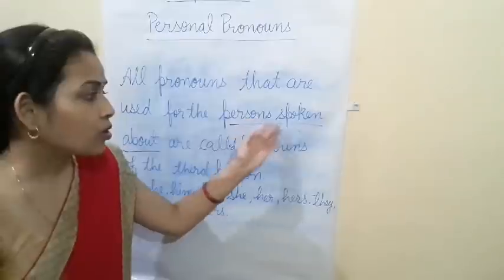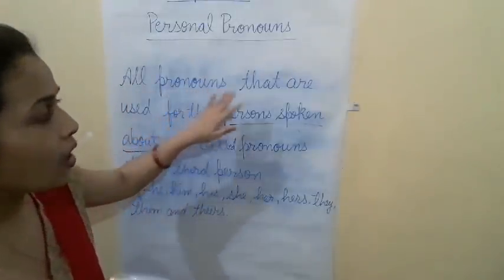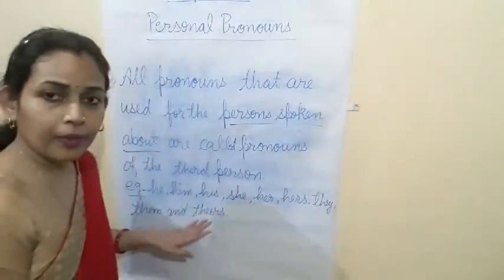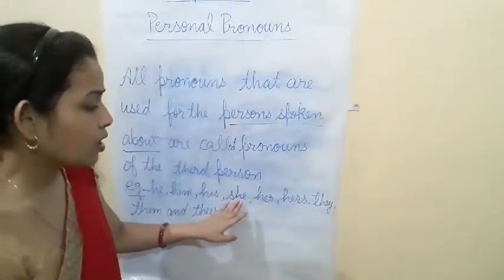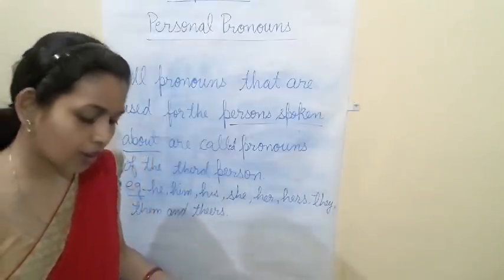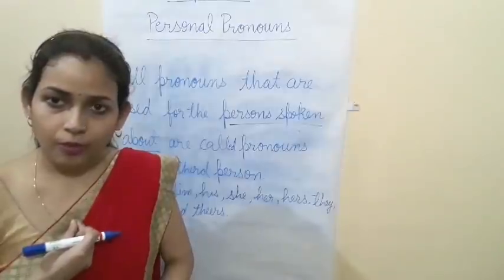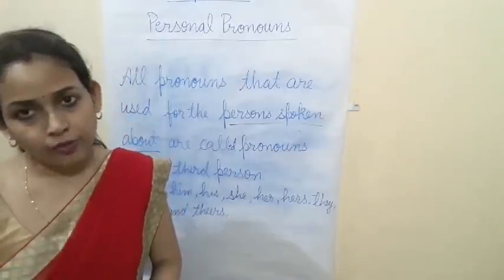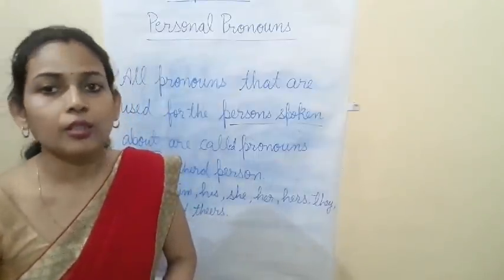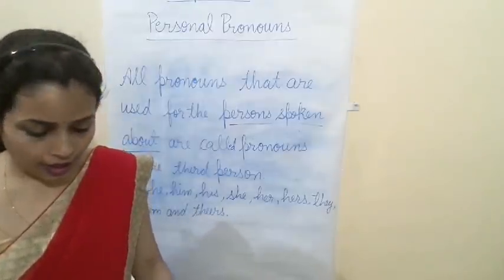Person spoken about — that is the third person of the pronoun. Examples of third person: he, him, his, she, her, hers, they, them, theirs. These are the first person, second person, and third person of the pronouns. First person: person speaking. Second person: person spoken to. Third person: person spoken about.